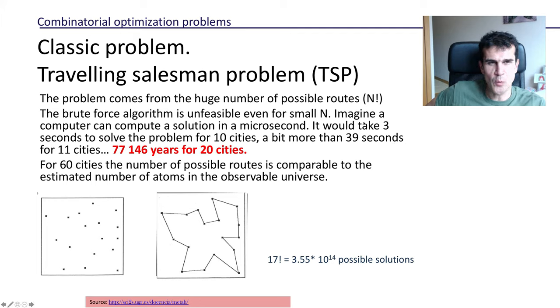To solve a problem for 10 cities would take us about 3 seconds, for 11 about 39 seconds, but for 20 cities—only 20 cities—it would take us more than 77,000 years. Think about it.